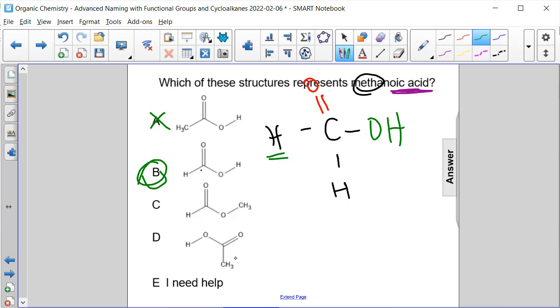So this is actually the same structure as A, it's just flipped like a mirror image. The answer here for methanoic acid is B.